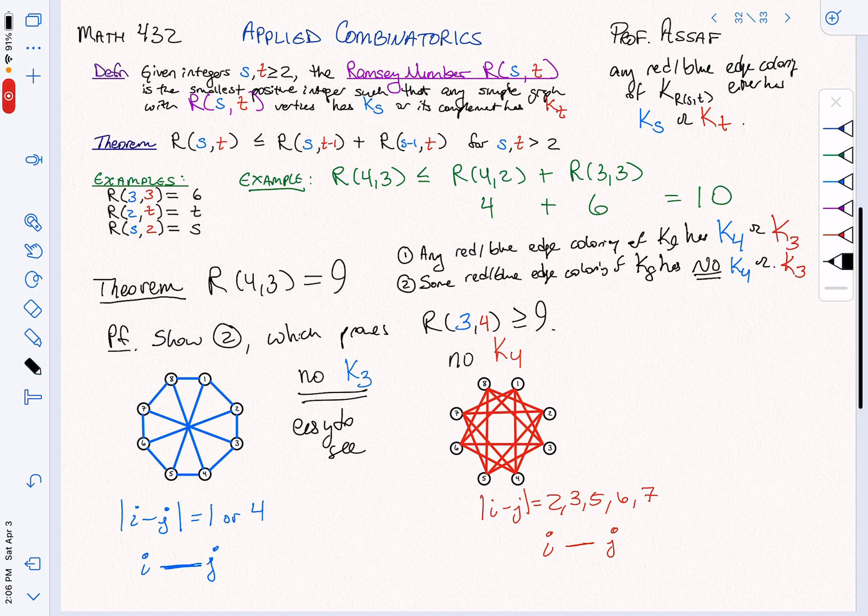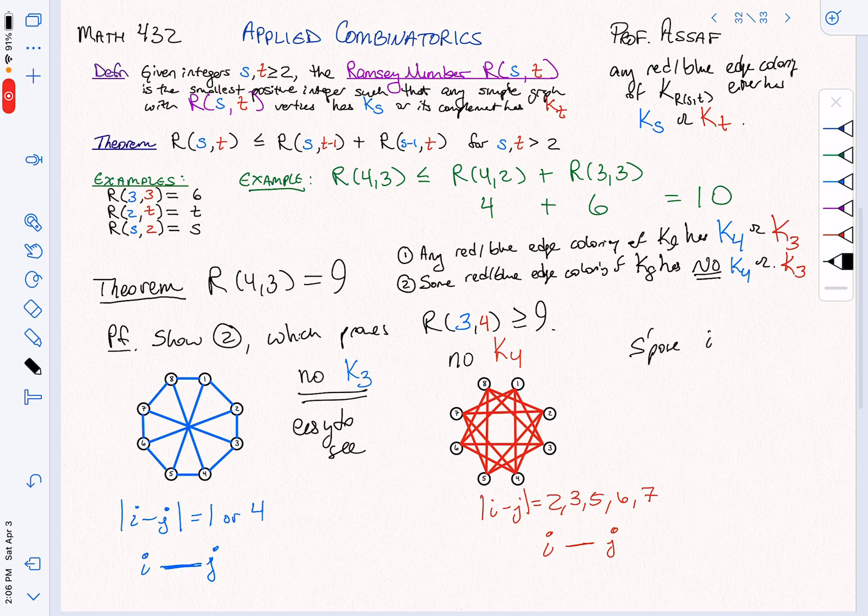This is a little more interesting to see why we don't get a K4 here. Let's suppose that i is the smallest label in some K4. And I'm not going to worry about the mod 8 part, taking my integers mod 8. Let's just do it this way.